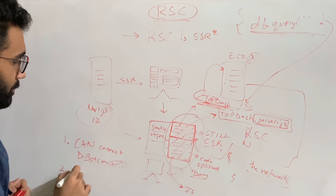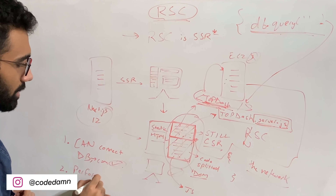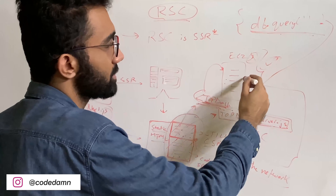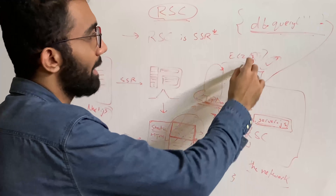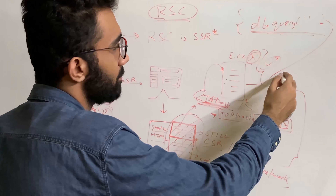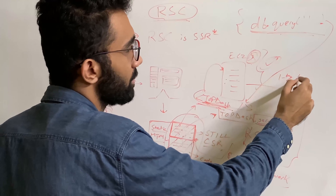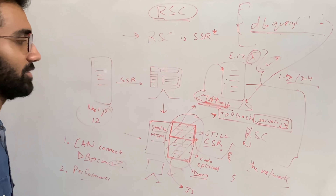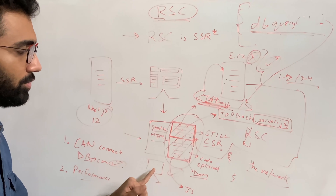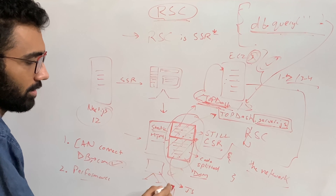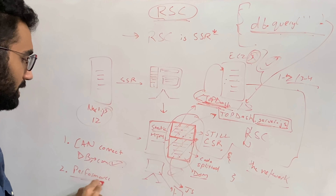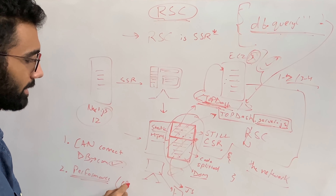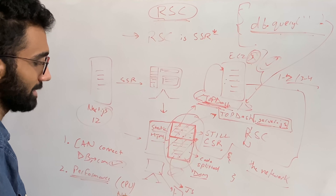The second advantage is performance. Your server's performance will likely be much better — especially with Lambda functions, you might have a one or two core system with three to four gigs of RAM dedicated just to rendering your component. Meanwhile, the client's computer has a ton of things running in the background. So you get better performance both in terms of network and CPU.